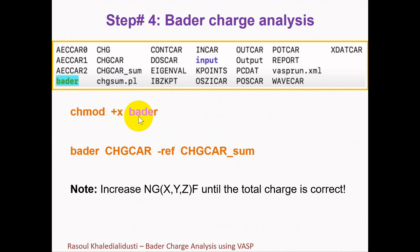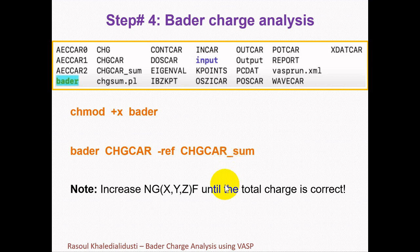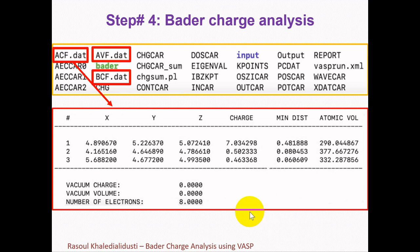The Bader analysis can be done on the total charge density file using the command: bader CHGCAR -ref CHGCAR_sum. Keep in mind that it is important to use a fine fast Fourier transform grid to accurately reproduce the correct total core charge. It's essential to do a few calculations increasing NGXF, NGYF, NGZF until the total charge is correct.